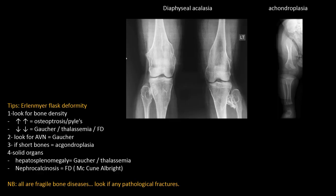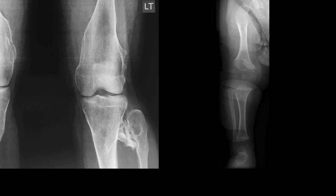Lastly, don't forget that achondroplasia and multiple hereditary exostoses (MHE) also cause metaphyseal flaring and Erlenmeyer flask deformity. MHE, which is autosomal dominant, is easily diagnosed by the presence of multiple sessile exostoses. In achondroplasia, the patient will typically have rhizomelic shortening and metaphyseal flaring.